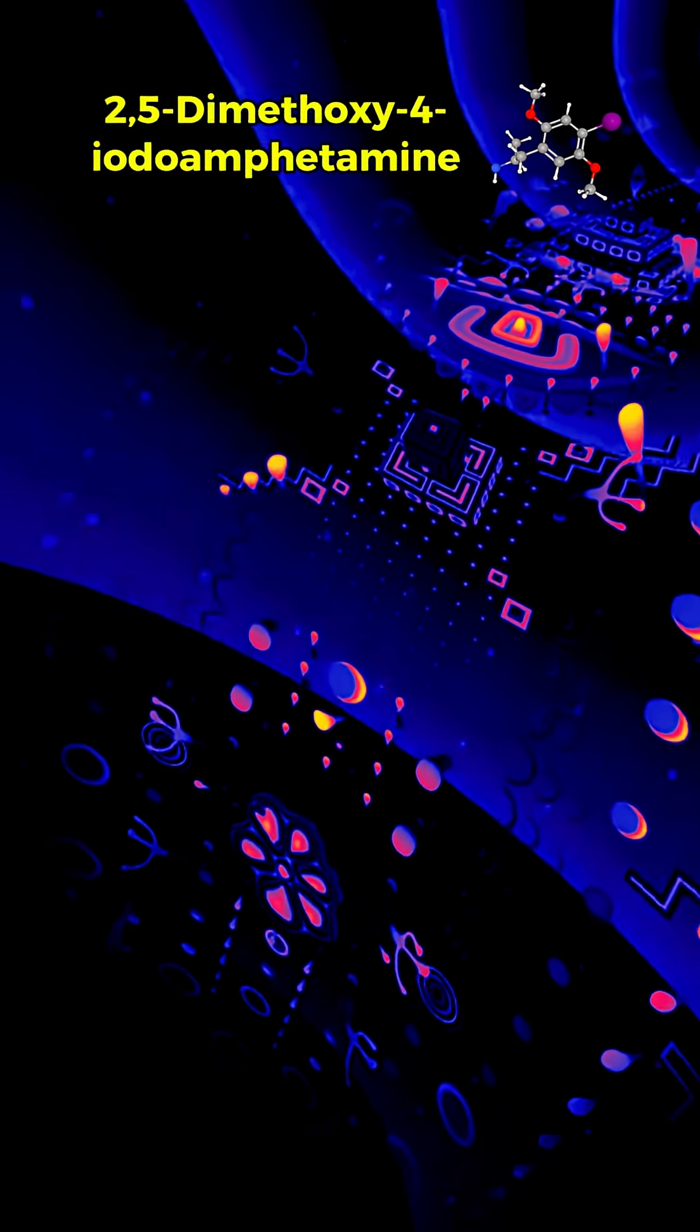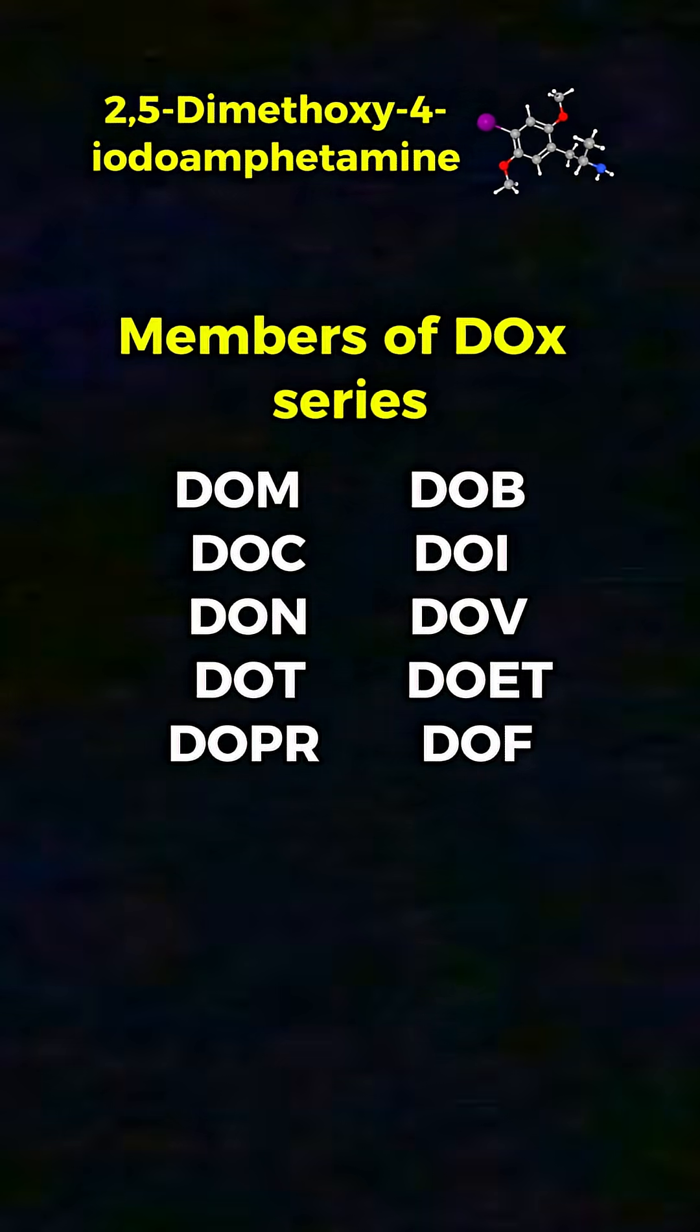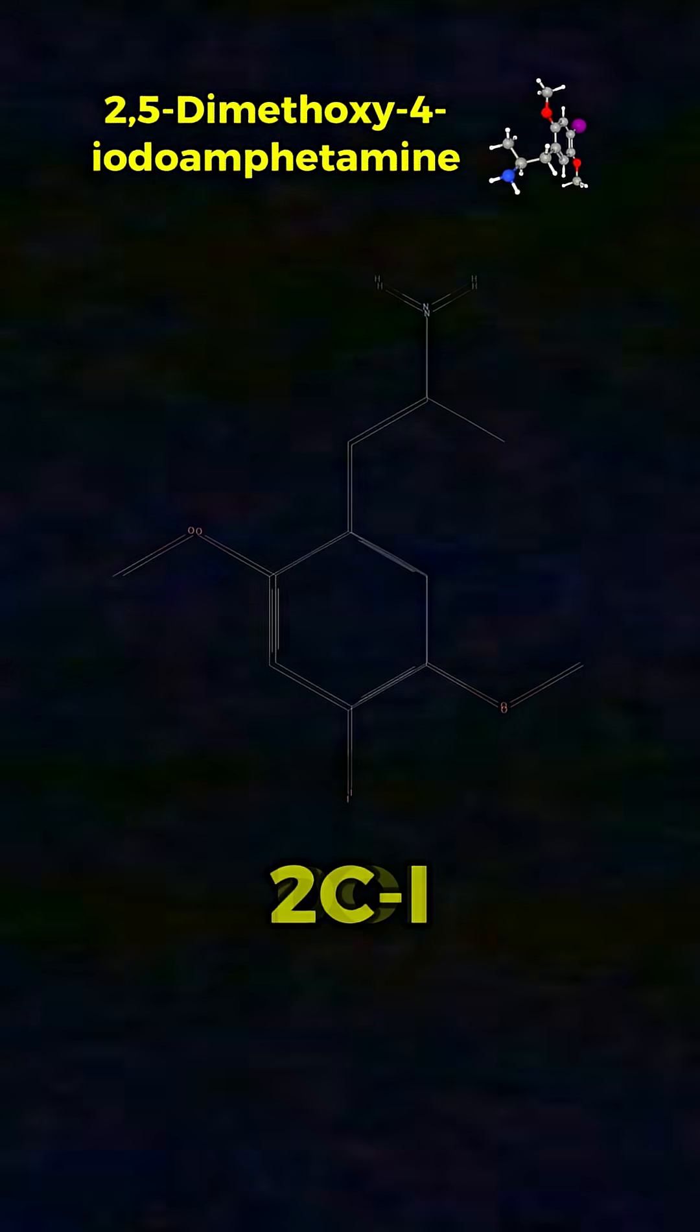DOI is a potent member of the psychedelic amphetamine family, specifically the DOX series. It is a substituted amphetamine and is structurally related to 2CI.